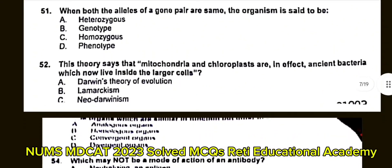Question number 52: This theory states that mitochondria and chloroplasts are in fact ancient bacteria which now live inside a larger cell. A. Darwin's theory of evolution. B. Lamarckism. C. Neo-Darwinism. D. Endosymbiotic theory. The correct answer is D: Endosymbiotic theory.